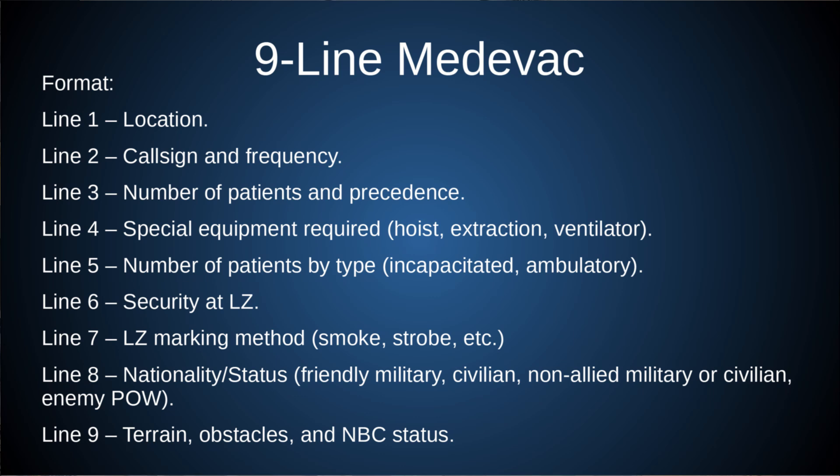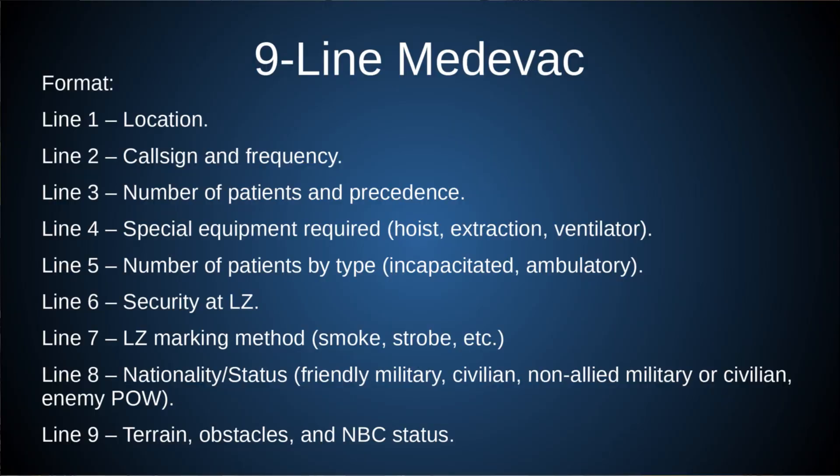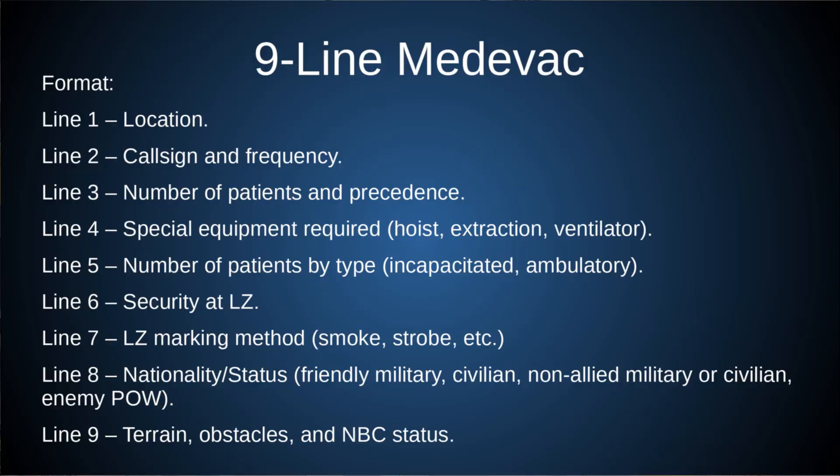Line 2 is your call sign and frequency. Line 3 is number of patients and precedence — are they red, yellow, or black? Line 4 is special equipment required to extract them — maybe a hoist for a helicopter, or jaws of life if they're trapped in a vehicle. Line 5 is number of patients by type: incapacitated or ambulatory. It's not redundant from line 3 — it focuses on mobility rather than severity. You could be missing an arm and be a red but still walk; it's just getting at whether you need a litter or not.